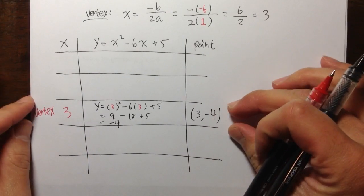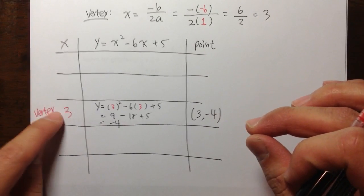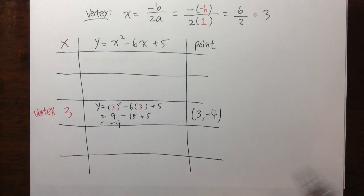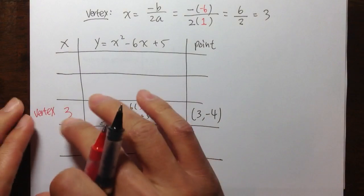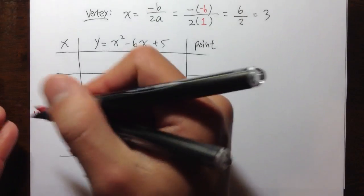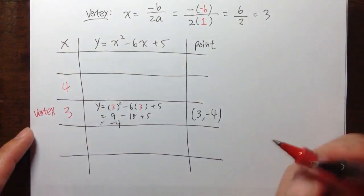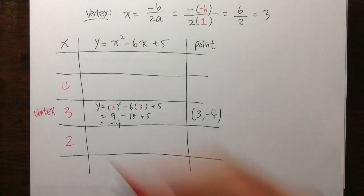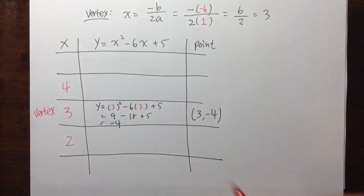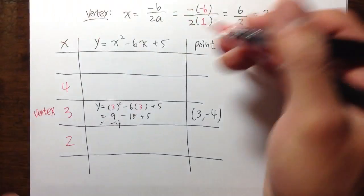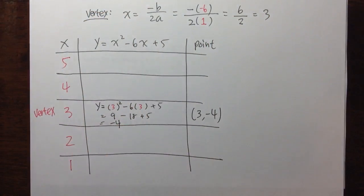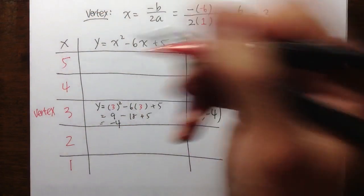Once we have the x value of 3, we're just going to select some neighbor numbers. We have 3, so of course we'll choose 4 — that's the number after 3 — and we can also choose 2. And if you want to make your parabola nice and pretty, you want five numbers, so I'll choose 5 and 1.